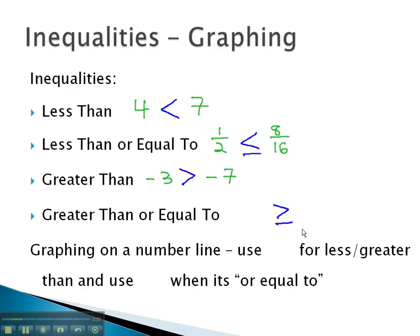Again, by putting a line underneath, the symbol now means greater than or equal to. 2 is greater than or equal to negative 4.